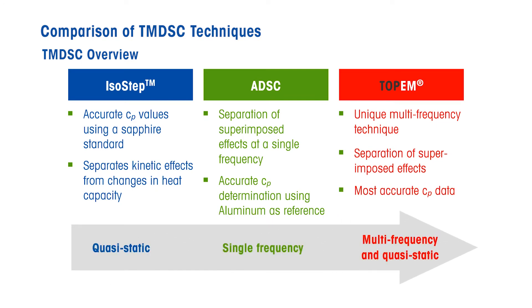All three techniques allow overlapping effects to be distinguished. This is achieved by separating heat flow into reversing and non-reversing heat flow components. Unlike ADSC and ISO-STEP, Topham also permits frequency-dependent effects to be investigated for even better result interpretation.